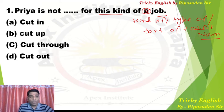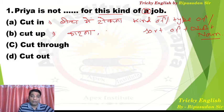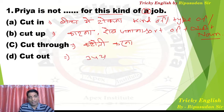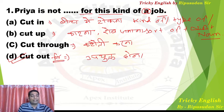This question is from phrasal verbs. 'Cut in' means to interrupt or interfere — to cut in between. 'Cut up' means to cut or, in some places, to show authority. Generally we use it in the sense of cutting. 'Cut through' means to take a shortcut — to take a shorter route. 'Cut out' means to be suitable — to be fit for something.